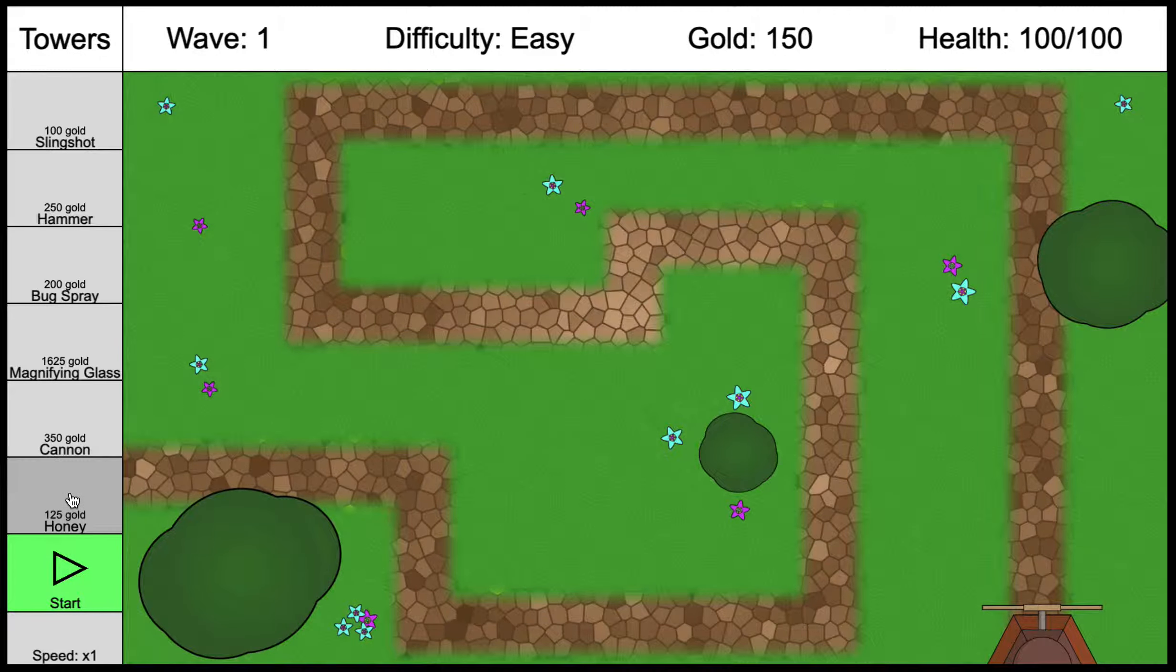Right now we have 150 gold to start, so you can click slingshot or honey. Honey doesn't do any damage, it just slows the ants down, so slingshot's your best bet. If you click start here, the wave will begin. There's a speed button down here, which allows you to increment the speed that the ants move, because sometimes if you have a tower here and the ant passes your tower, it can take a very long time for ants to get through.